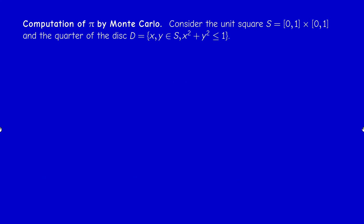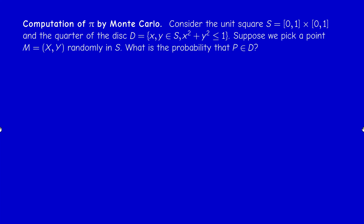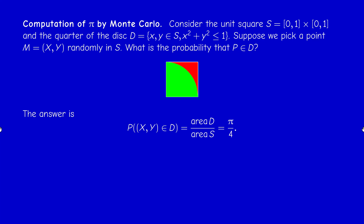Let us now illustrate the computation of π by Monte Carlo. Consider the unit square (0,1)×(0,1) and the quarter of a disk inside it. If we choose a point uniformly at random inside the square, the probability that the point falls in the green region — the quarter disk — is just the area of the quarter disk over the area of the square, which is π/4, since the area of the square is 1.